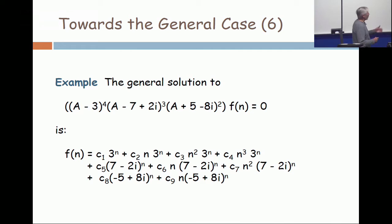So there it is in factored form. A minus three is a factor four times. That means three is a root of multiplicity four. So there are four terms in the basis that correspond to that root: 3^n, n·3^n, n^2·3^n, and n^3·3^n.